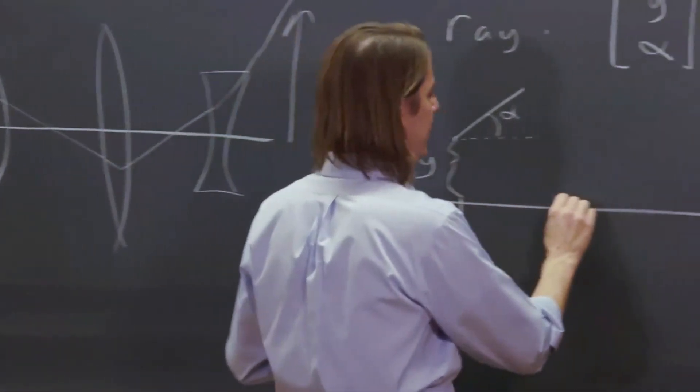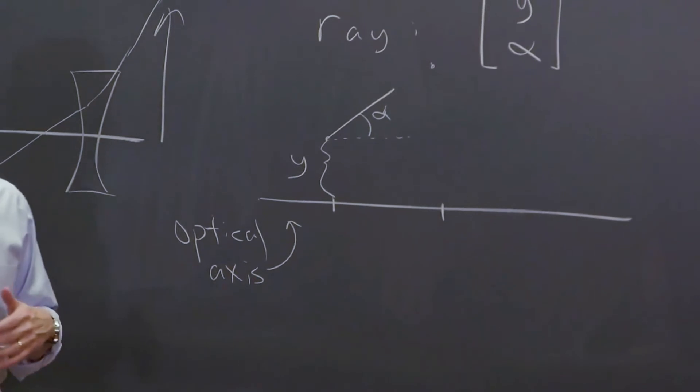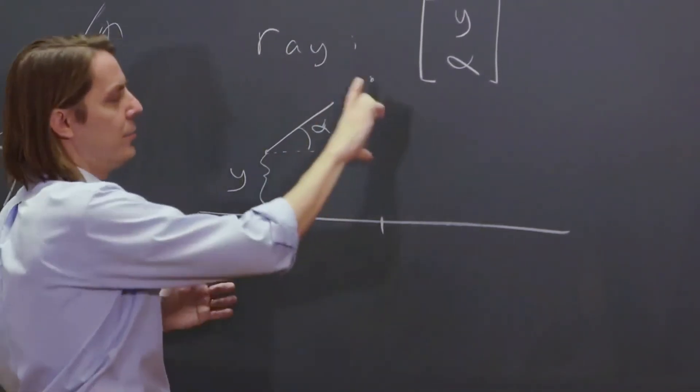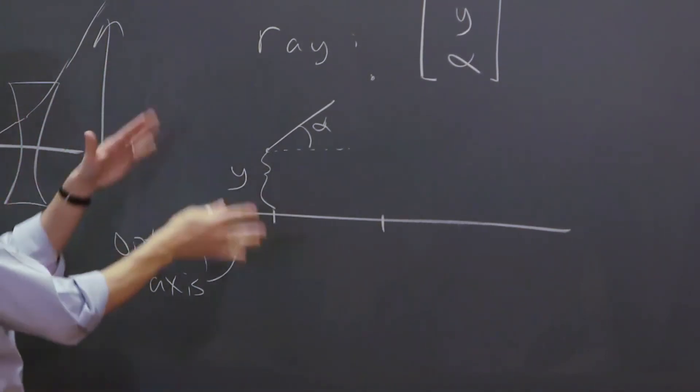Now if you move, say, to this point, we know that ray is going to go in a straight line. It'll have a new matrix, or there'll be a new vector that describes it. You can tell it would be at the same angle, it would just be higher. So what we can do is keep up with what all the rays are doing.